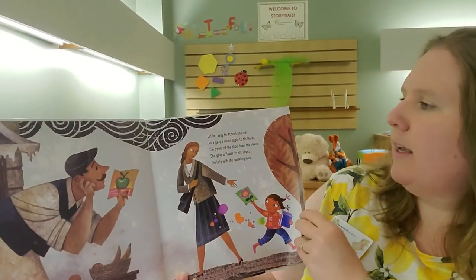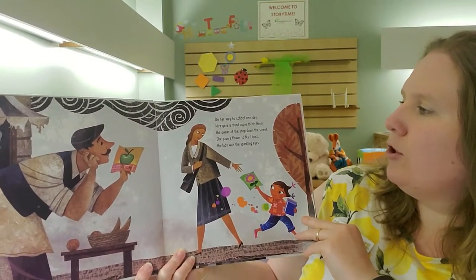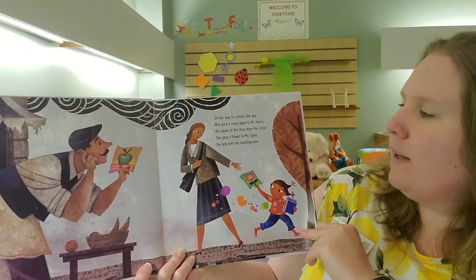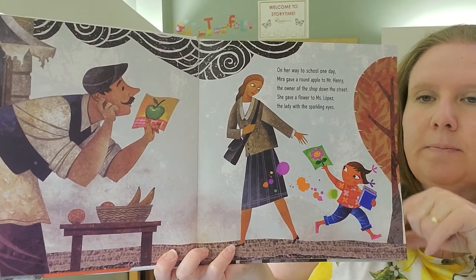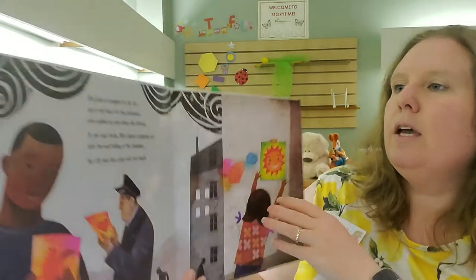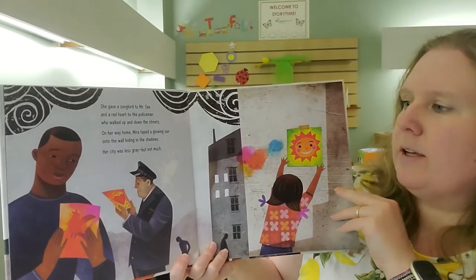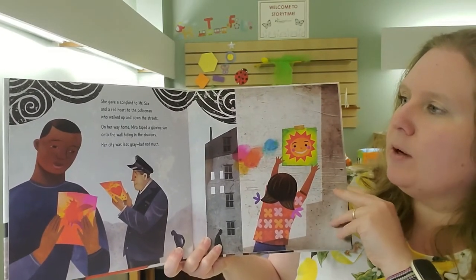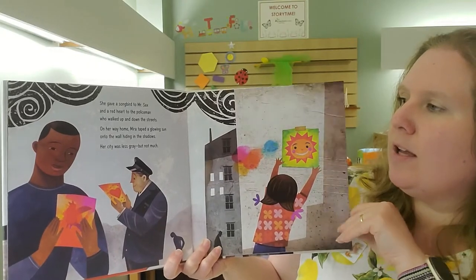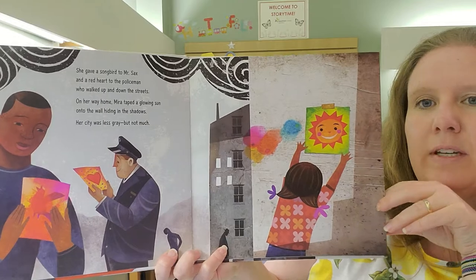On her way to school one day, Mira gave a round apple to Mr. Henry, the owner of the shop down the street. She gave a flower to Ms. Lopez, the lady with the sparkling eyes. She gave a song word to Mr. Sacks and a red heart to the policeman who walked up and down the streets. On her way home, Mira taped a glowing sun onto the wall hiding in the shadows. Her city was less gray, but not much.